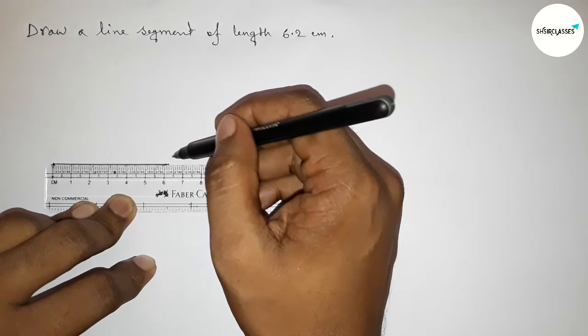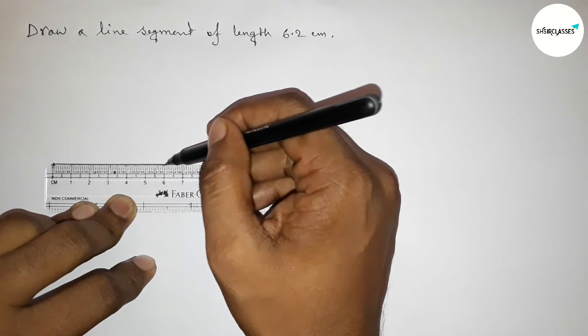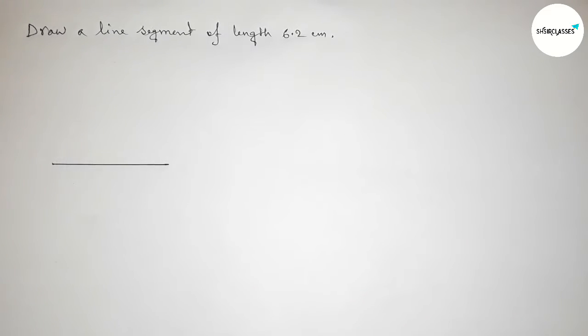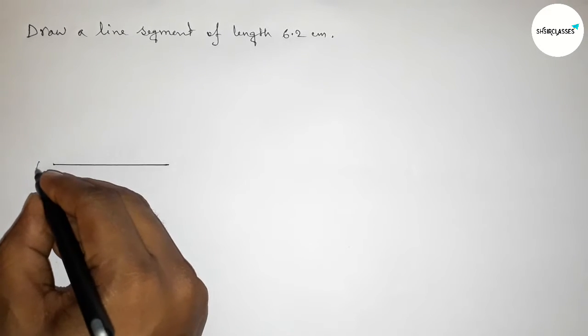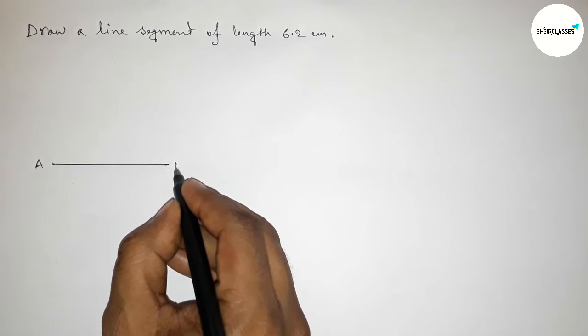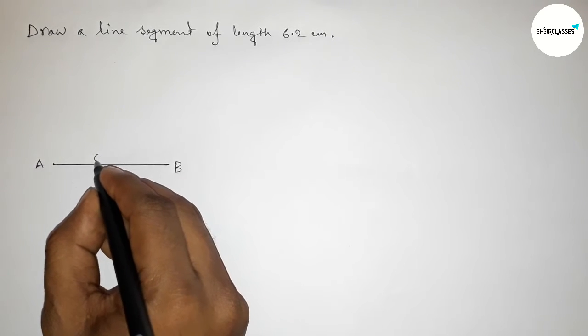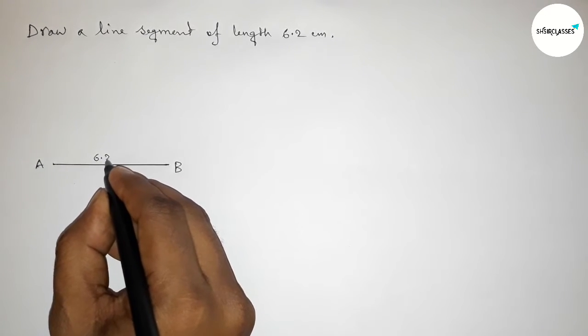And joining this line. Okay, so perfectly. Now taking here point A and here B, so AB equals to 6.2 centimeters.